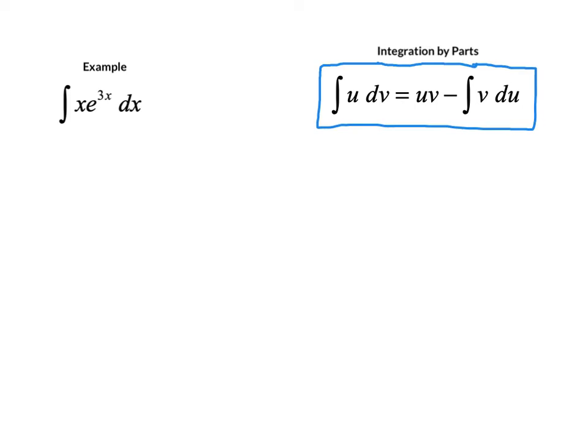Because if we look on the right-hand side, the differential du is going to be required at some point. So in this case, that means that we let u equal the polynomial factor, which is x, because the derivative of a polynomial gets simpler, the derivative of an exponential really does not.